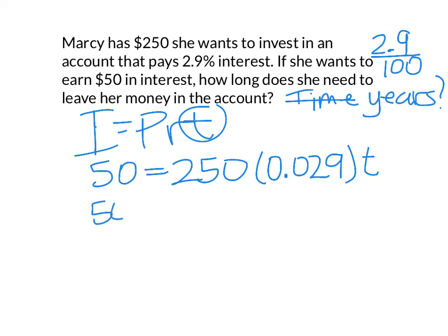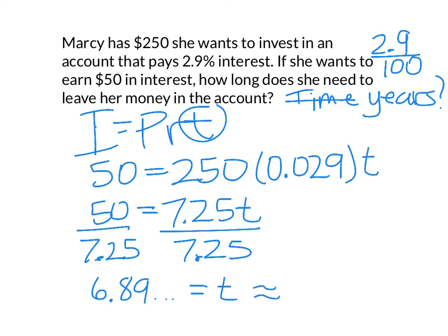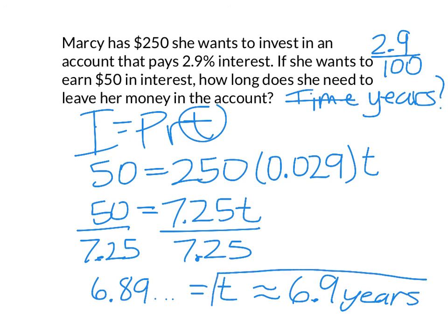I multiply 250 times 0.029, and that equals 7.25, keeping our variable T. Now I do inverse operations to isolate T: divide both sides by 7.25. That gives me 6.89655..., and that's the time — so that's years. If I round it, I can round it to 6.9 or approximately 7 years, but rounding to the nearest tenth we get 6.9. Make sure you put on your units — years. And that is simple interest.